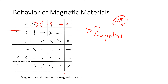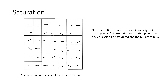If you looked at a section of that blown up, you'd see all these dipoles kind of randomly oriented — the arrows are all going different ways. When you wrap a coil around this thing and put a current in the coil, that makes a B field — B applied. That B field causes all those little magnetic dipoles to line up. Once they all sort of line up, the material is saturated.